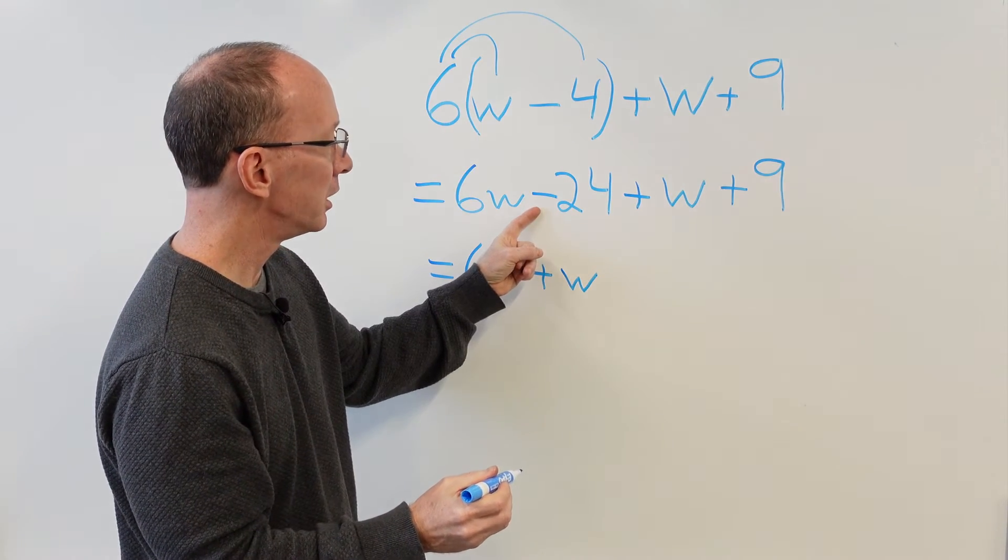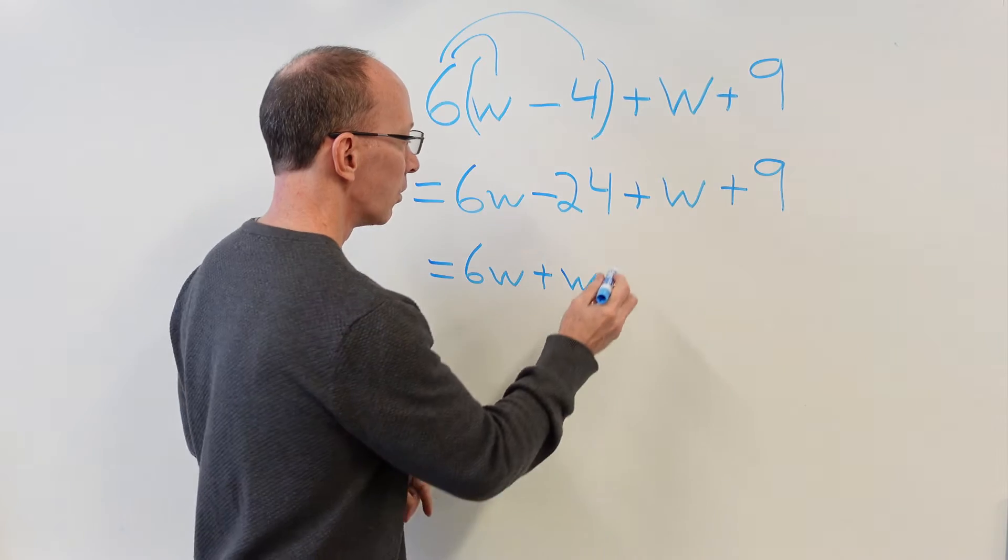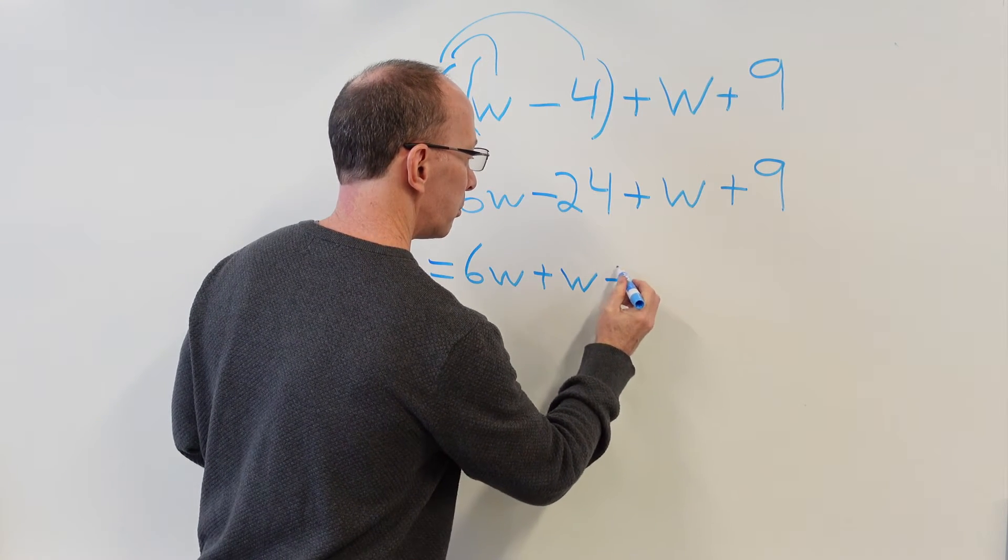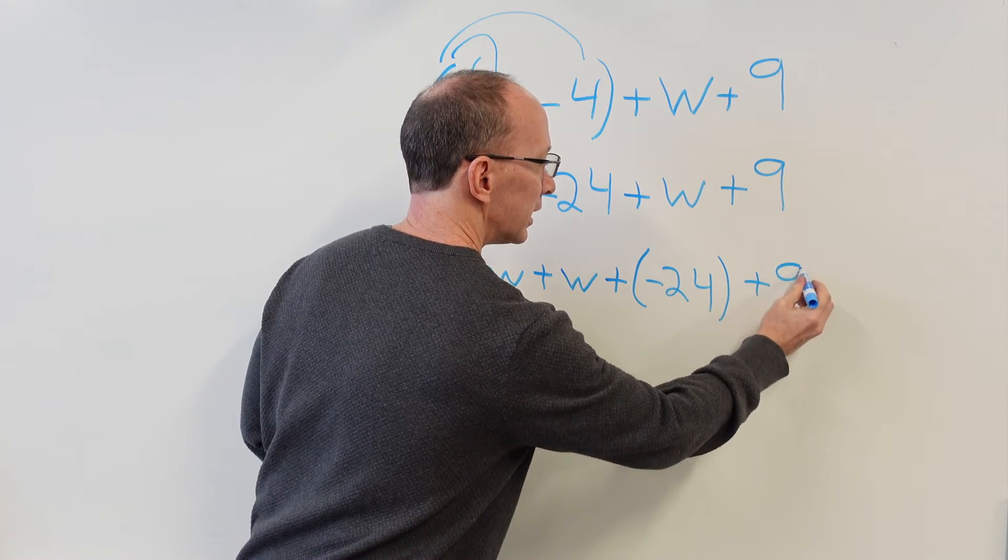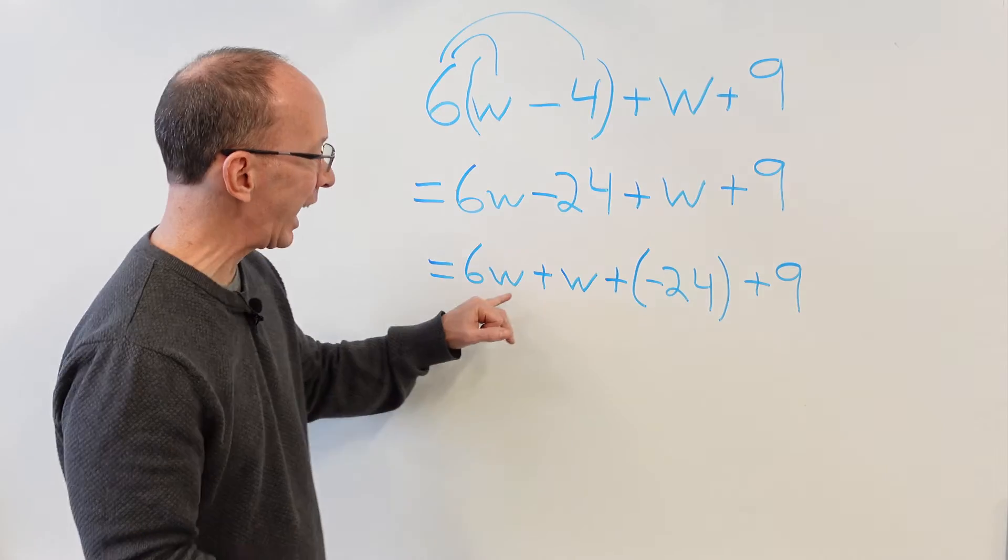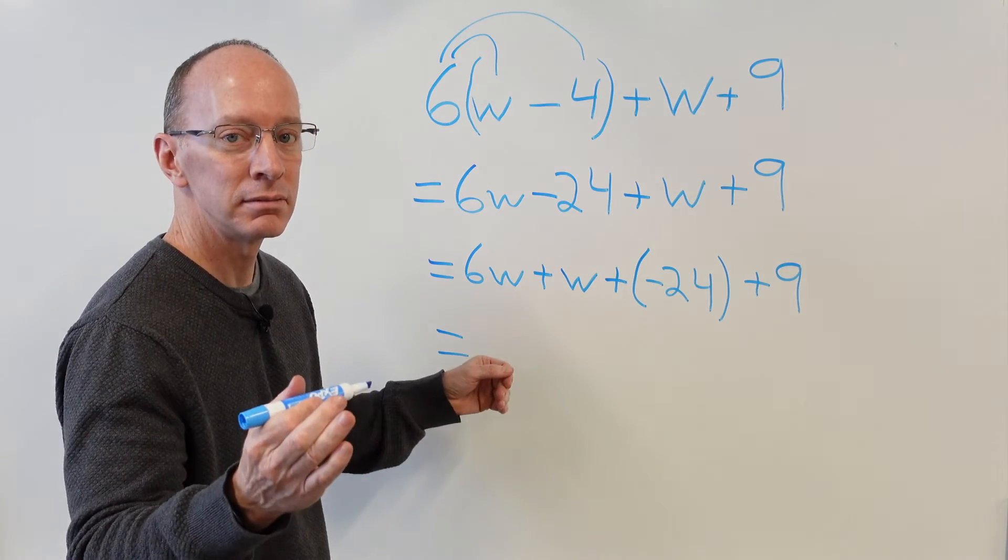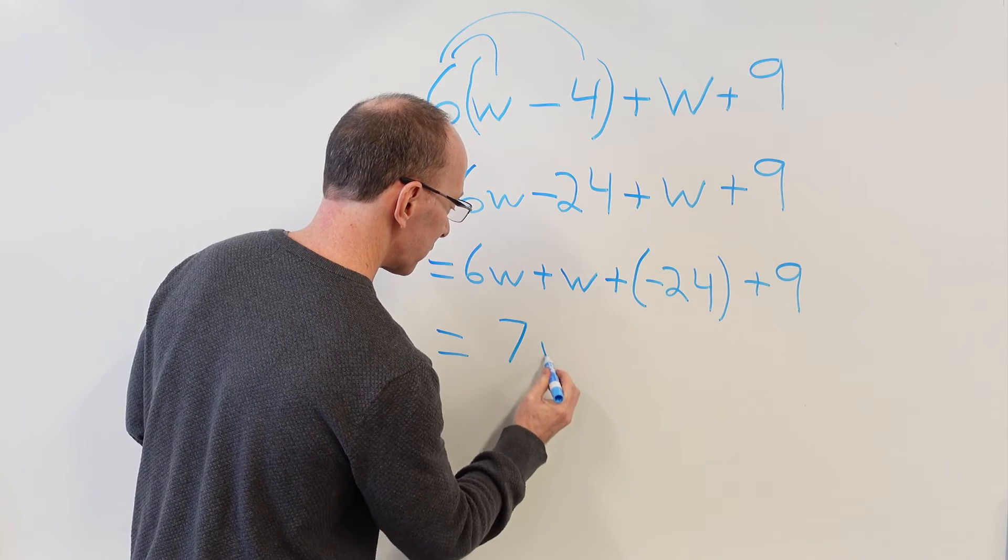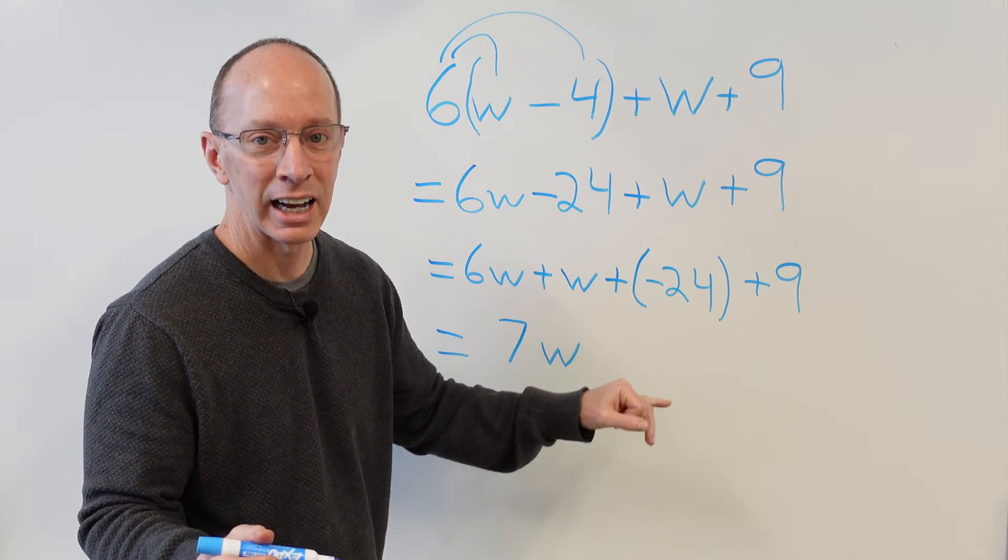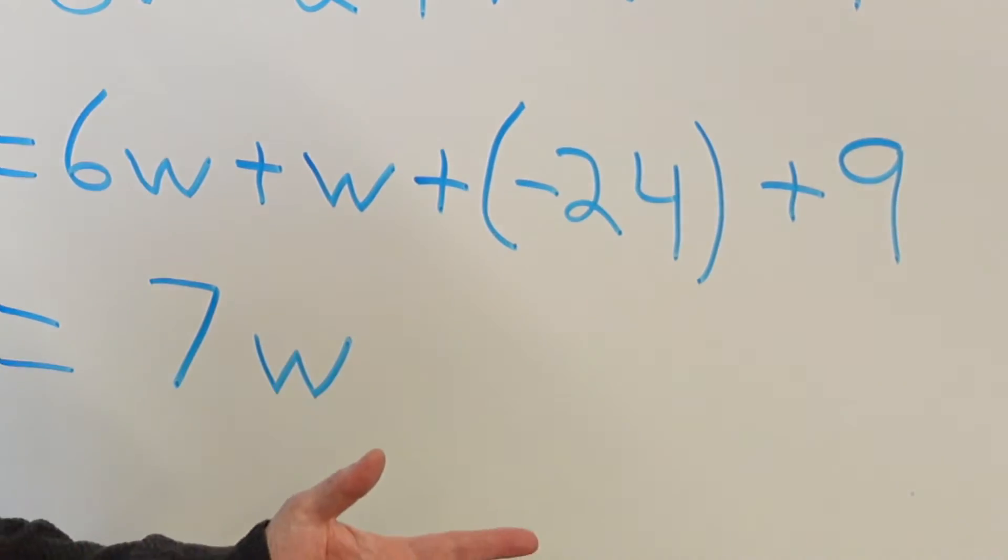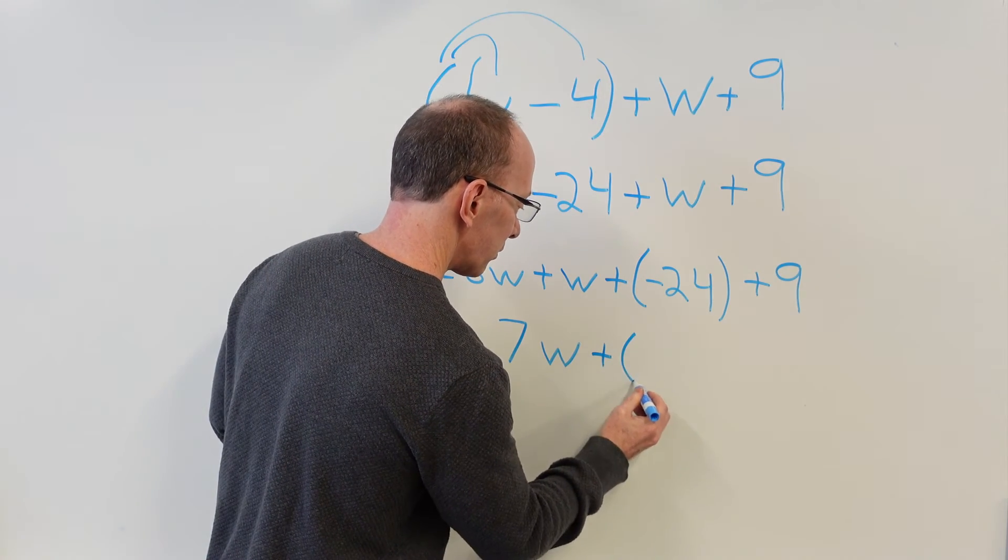And then we have negative 24 right there. It says minus 24, but it's a negative 24 right there. I'm going to go ahead and put plus a negative 24 plus 9. Now I'm going to add these right here. 6w plus w is 7w. Now we have negative 24 and 9. Negative 24 plus 9 would be negative 15.